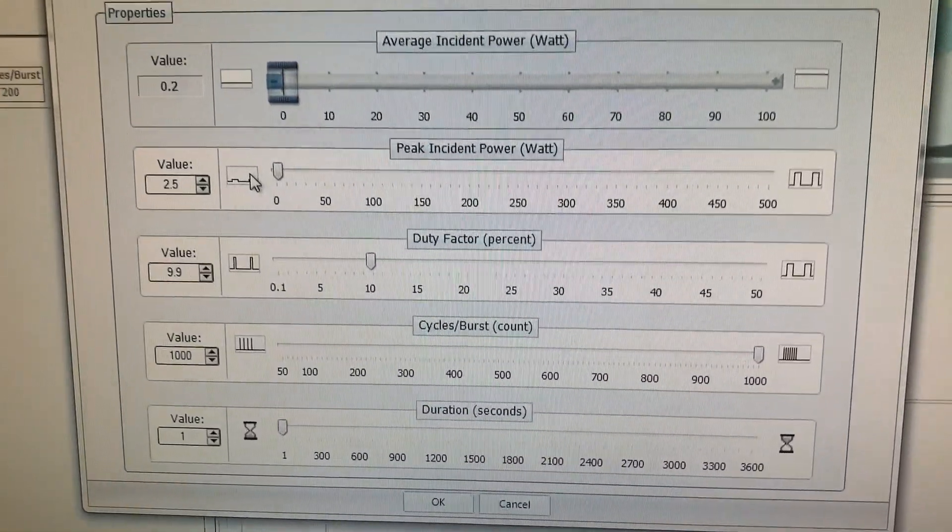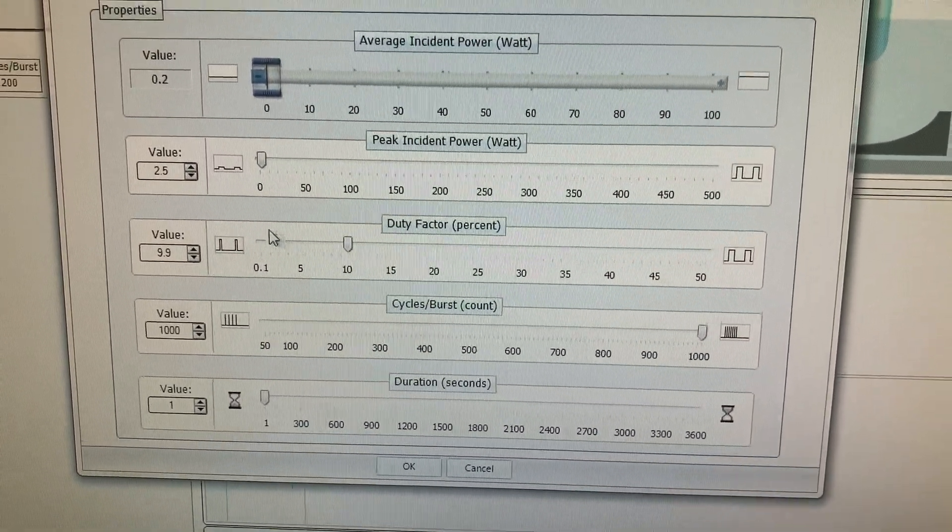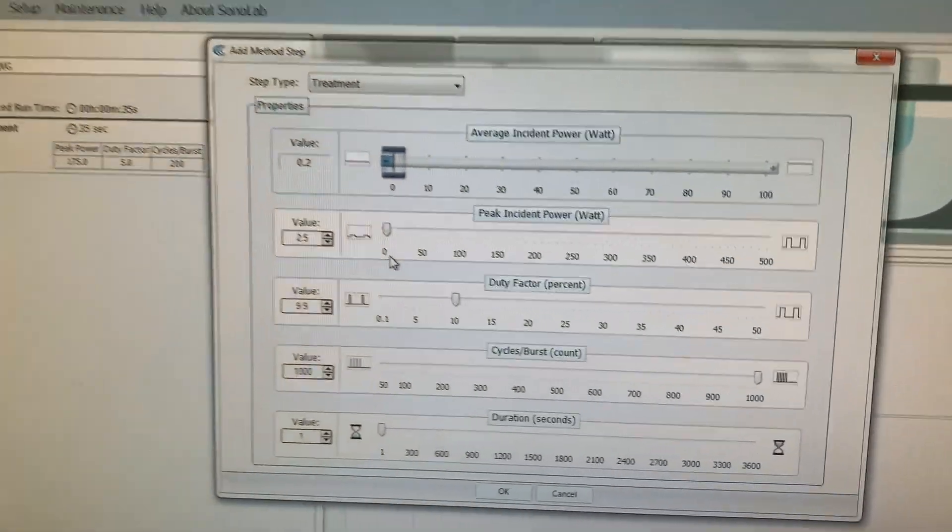The DNA sizes can be controlled by selecting the length of sonication, the cycle duty, cycle bursts.